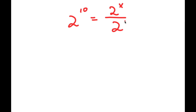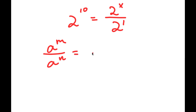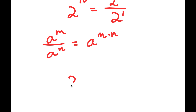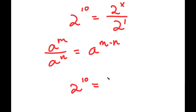And 2 here is the same thing as 2 to the power of 1. If I have something in the form a to the power of m over a to the power of n, this is equal to a to the power of m minus n. So 2 to the power of 10 is going to equal 2 to the power of x minus 1.